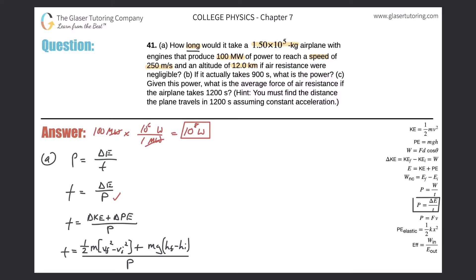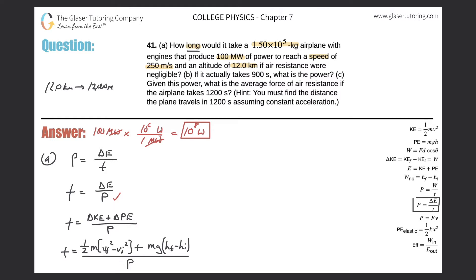Do I know these variables? The mass of the airplane was 1.5×10⁵ kilograms. The final velocity is 250 m/s, and I'll assume the initial velocity is zero since it starts from rest. I know gravity, and I'll assume it starts at zero height, reaching a final height of 12 kilometers — which is 12,000 meters.